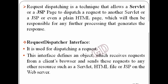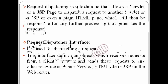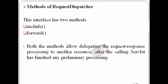To perform this task of request dispatching, we have an interface named RequestDispatcher. This interface defines an object which receives the request from the client's browser and sends these requests to any other resource such as a servlet, HTML file, or JSP file. This interface has two methods: the first method is the include method, and the second method is the forward method. Both these methods allow delegating the request-response processing to any other resource after the calling servlet has finished any preliminary processing.